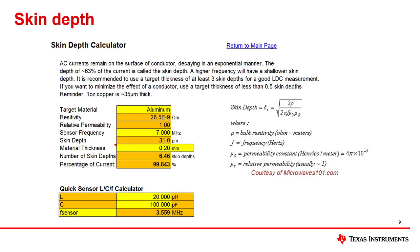The skin depth tab allows you to determine how thick the target material needs to be to achieve the best sensor and target interaction. Different metal types are supported, and there is a quick LC frequency calculator included. For best results, the target should be at least three skin depths thick. In this example, an aluminum target is used with a sensor operating at 7 MHz. The target is 0.2 mm thick, giving over six skin depths, so it will have no issues coupling to the sensor.